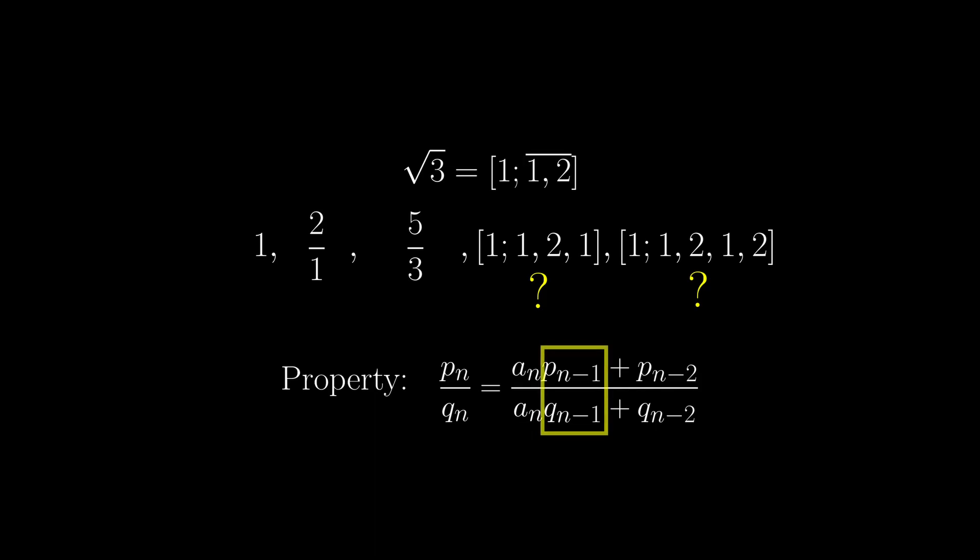We only need to know the previous two fractions, as well as the last entry of the continued fraction. So we can use this property to get the fraction to be 7 over 4, without having to calculate the entire continued fraction again.